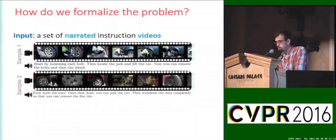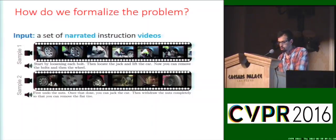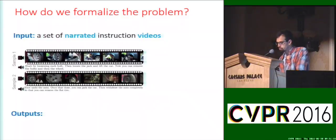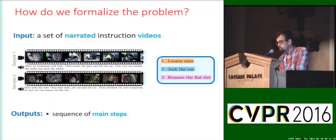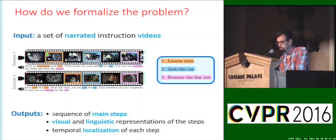Here is how we formulate our problem. We first start with a set of narrated instruction videos all depicting the same task. For each video of the set, we assume that we have access to a transcription of what the person is saying in the form of subtitles. From this input, we want to recover several outputs. First, we want to get the list of main steps required to achieve the task. Second, we wish to obtain the different linguistic representations of the steps. Finally, we want to temporally localize each step in the video, as well as have a visual representation of each step.